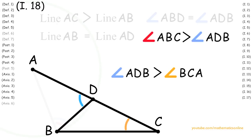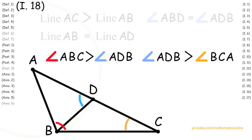Now, since we also have that angle ABC is greater than angle ADB, then we must have that angle ABC is greater than angle BCA.